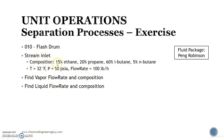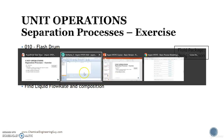We have this stream inlet which contains 15% ethane, 20% propane, 60% isobutane, and 5% n-butane. Let's assume this is molar flow rate. The temperature is 32 Fahrenheit, the pressure is 50 psi absolute, and the flow rate is 100 pounds per hour. We will be modeling this with the fluid package of Peng-Robinson. The overall idea is to model this separation process and to find the vapor and liquid flow rate and their compositions. So let's go and model that.